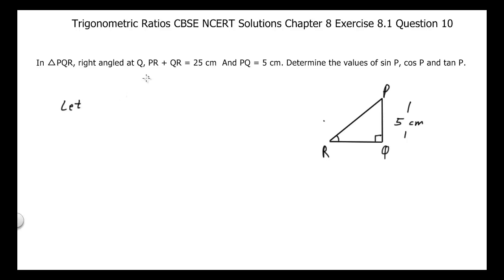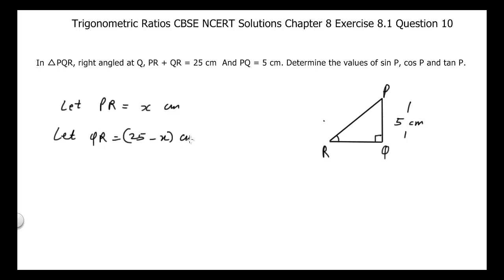We start by letting PR equal X centimeters and QR equal 25 minus X centimeters, because it is given that PR plus QR is 25 centimeters.